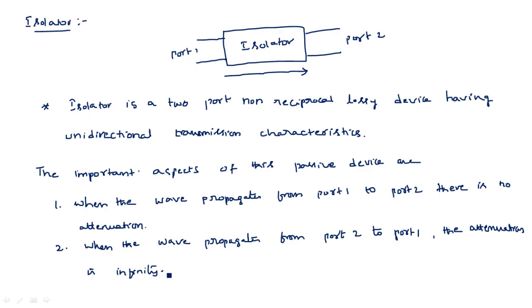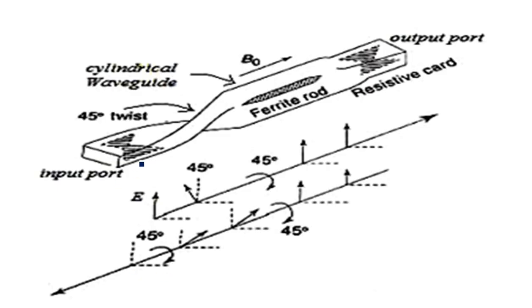Now let us see the operation of this isolator in detail using this diagram. This is the isolator's inside structure — it has an input port and an output port. It is a two-port device with a non-reciprocal nature, meaning the operation from port 1 to port 2 is different from port 2 to port 1. Now let us consider an electric field in the upward direction applied at the input port and see how its behavior changes stage by stage until it reaches the output port.